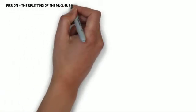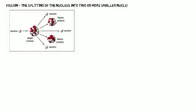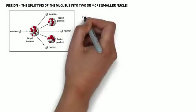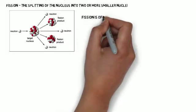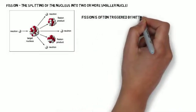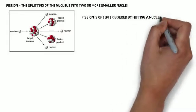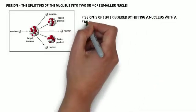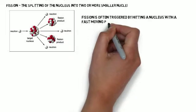There are a couple of common transmutation reactions. The first one is fission. Fission is the splitting of the nucleus into two or more smaller nuclei. Fission is often triggered by hitting a nucleus with a neutron, even though it can be spontaneous at times.